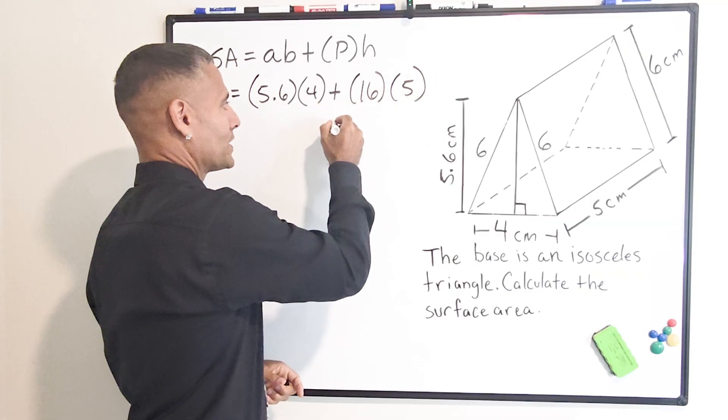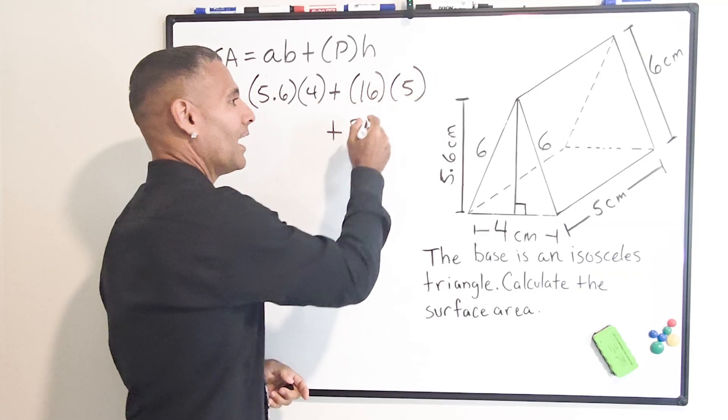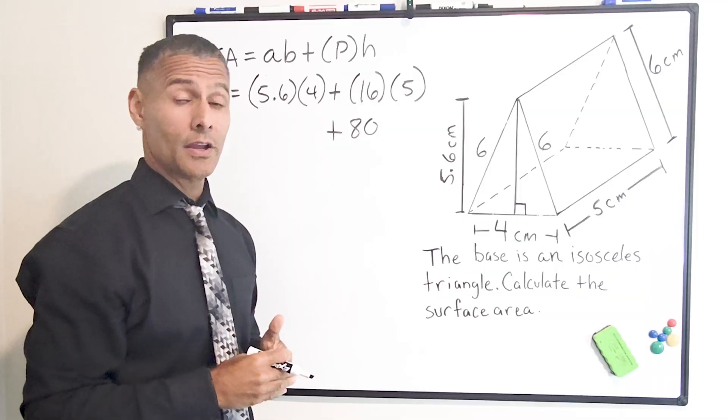So 16 times five, which is 80, gives us the lateral area of our triangular prism.